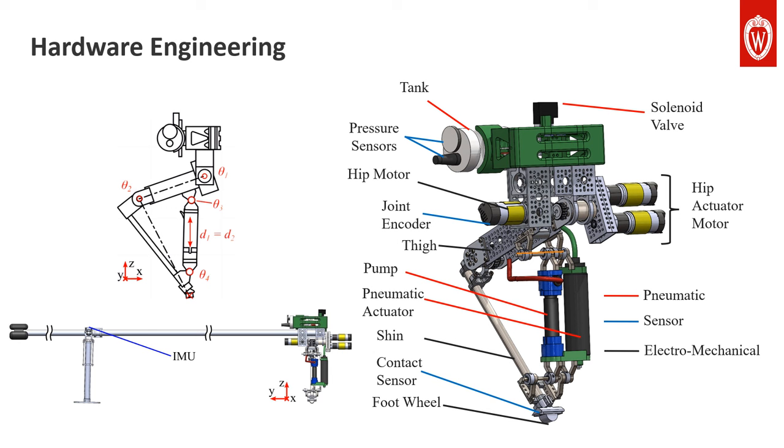We start by building a planar hopping robot that is originally actuated by electric motors. The proposed pneumatic augmentation is then designed and installed on the robot.